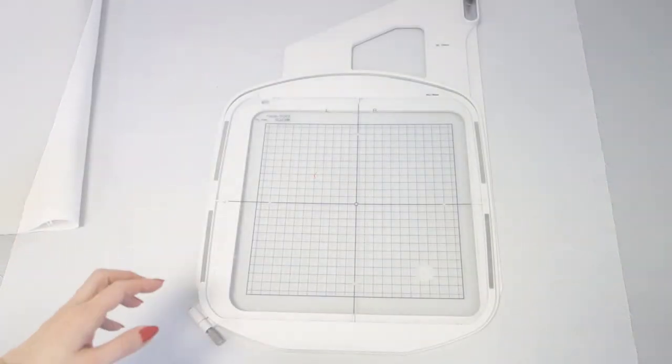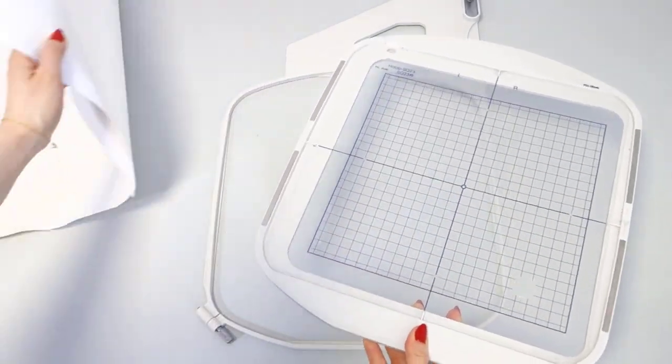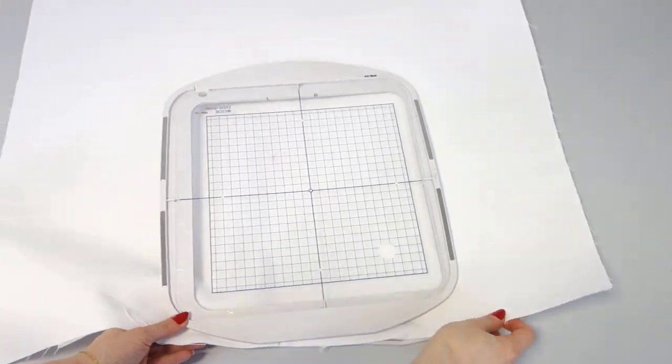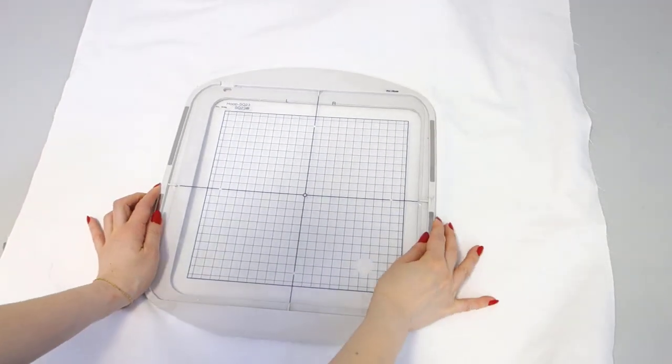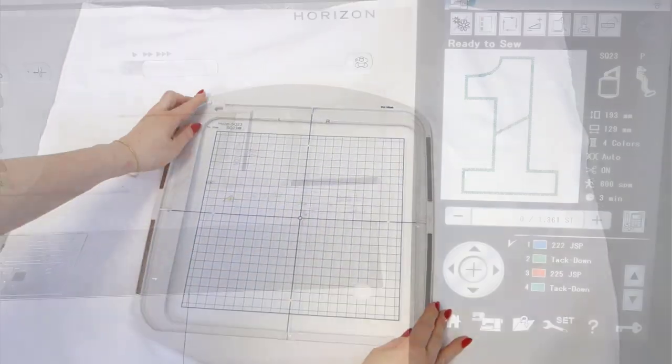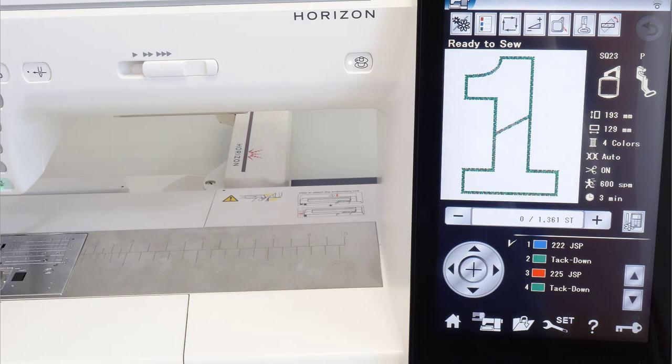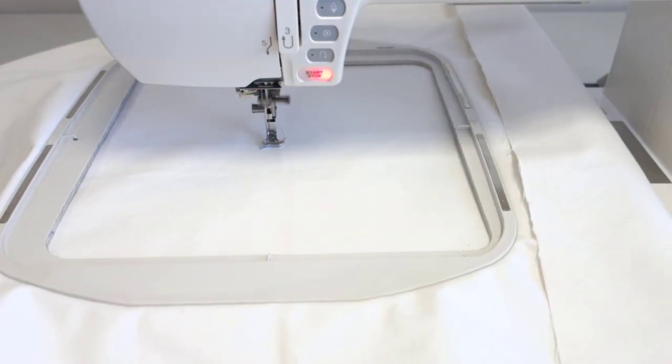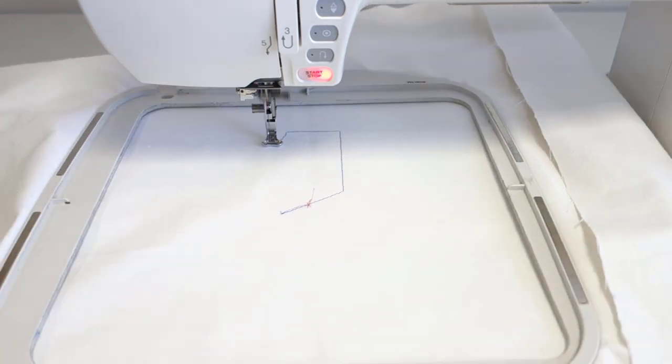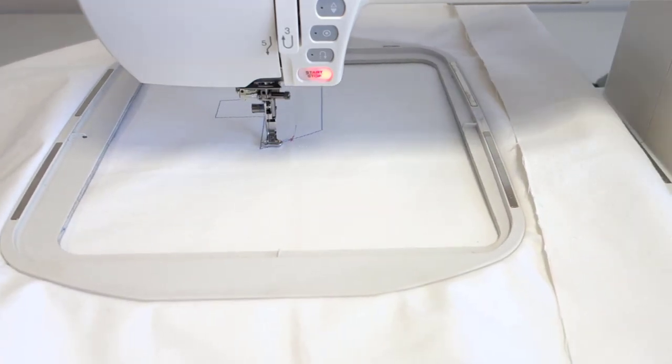Now, use adhesive spray to the stabilizer, place the fabric on top and press it down firmly. Open the file and thread the machine. Attach the hoop to the machine and start the first outline. This is our guide stitch for placing the applique fabric.